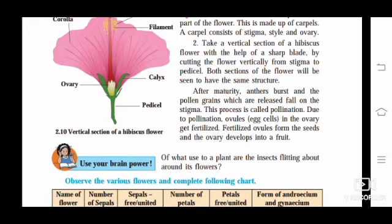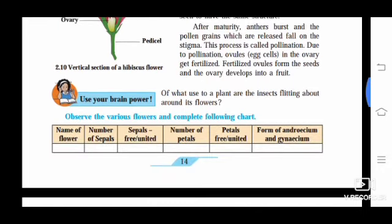After maturity, the anther bursts and the pollen grains which are released fall on the stigma. This process is called pollination. Due to pollination, ovules - the egg cells or female cells in the ovary - get fertilized by the pollen grains, the male cells. Fertilized ovules form the seed and the ovary develops into the fruit. So flower is the reproductive part of a plant.